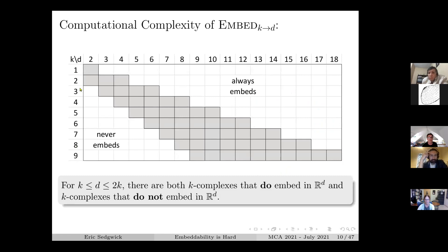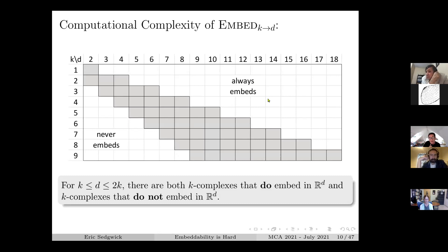Let's vary k and d. The k's down the left side represent the dimension of the complex, and the d's across the top are the dimension of the ambient space. Obviously some things don't embed - if you take a simplex of dimension five, that doesn't embed into four-dimensional space. Over to the left we find things which never embed at all; if the dimension is too high you're just not going to be able to do it.